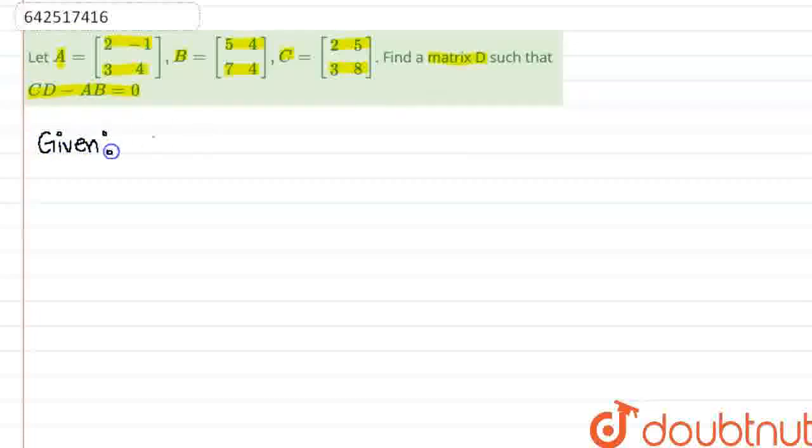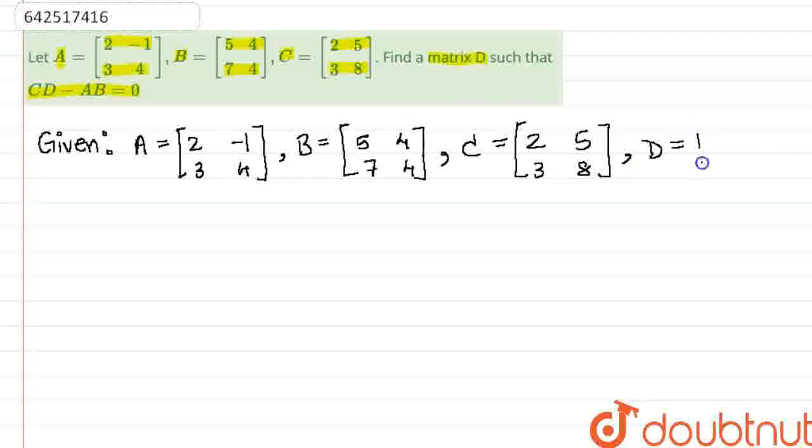We are given 4 matrices: A is 2, negative 1, 3, 4, B is 5, 4, 7, 4, C is 2, 5, 3, 8, and D which we do not know.